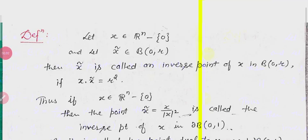Hello everyone. In the last video lecture we talked about the solution of the boundary value problem for the half space. So today we will talk about the Green's function for the unit ball. Before that, we have a definition for the inverse point in the ball.